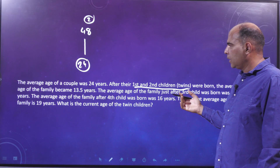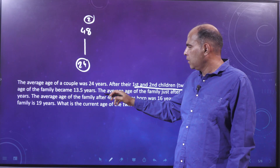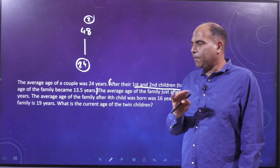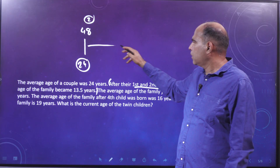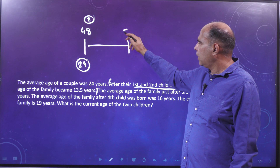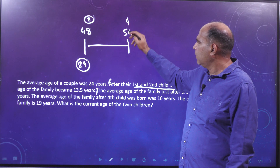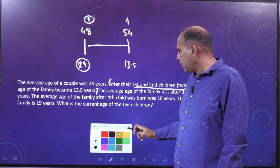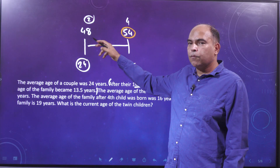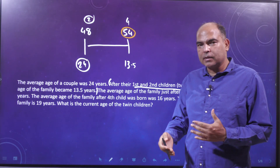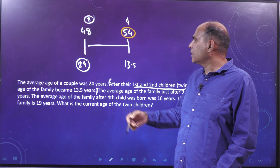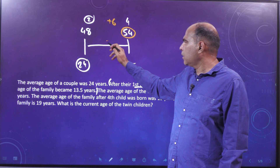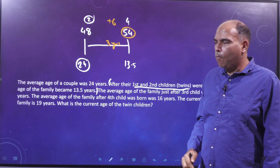After their first and second children — twins — were born, the average age of the family became 13.5 years. Now there are four people with an average of 13.5, giving a total age of 54. The total age shifted from 48 to 54. Since two people's ages increased, and the total went up by 6, the elapsed time must be 3 years.